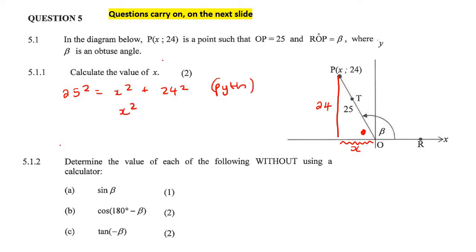So we can just say that 25 squared is equal to, let's just call this x, x squared plus 24 squared, and that's because of Pythagoras. And then if we had to get x squared alone, you would eventually get 25 squared minus 24 squared. And that's going to be 49, but then if you square root that, you're going to get 7.